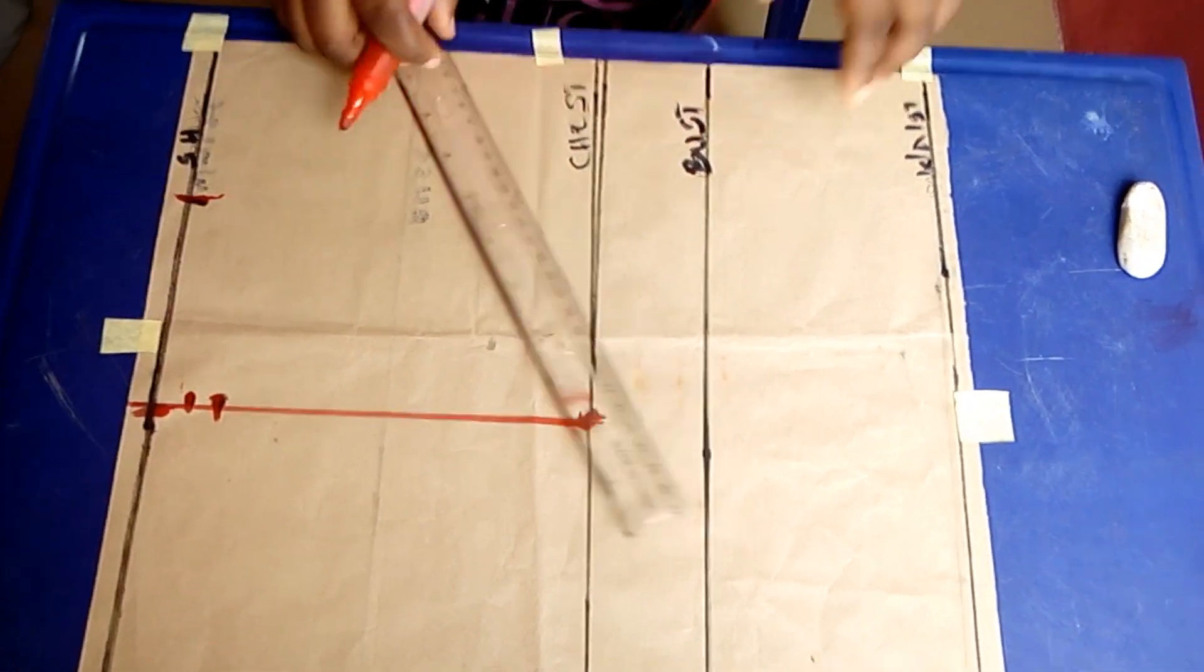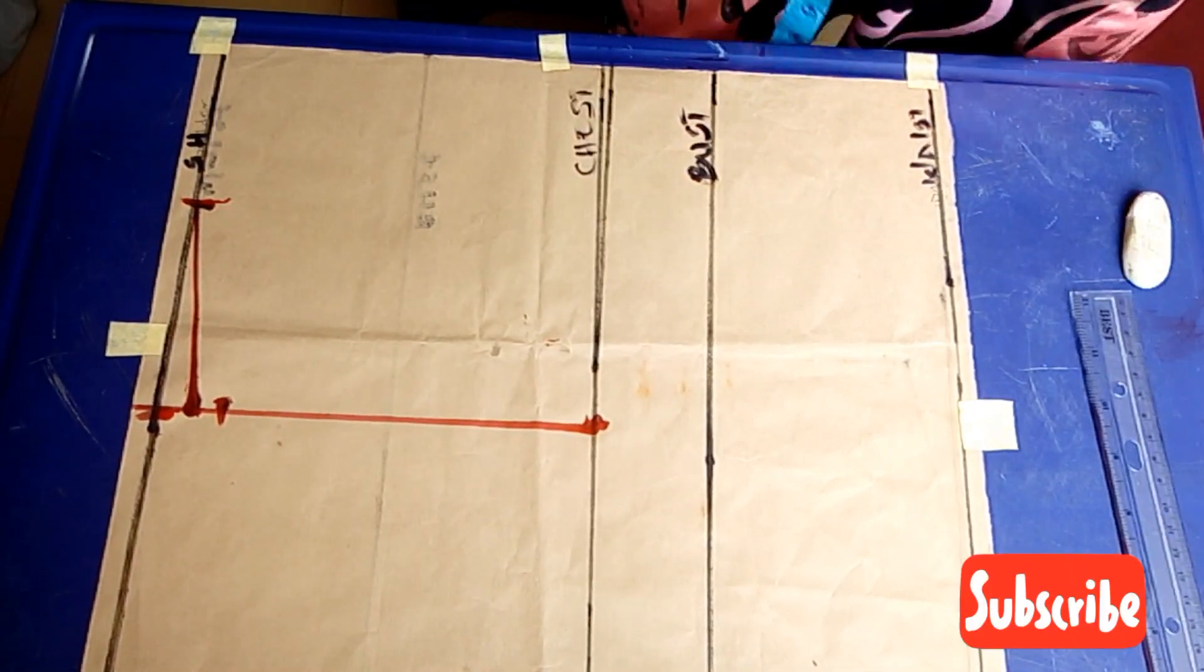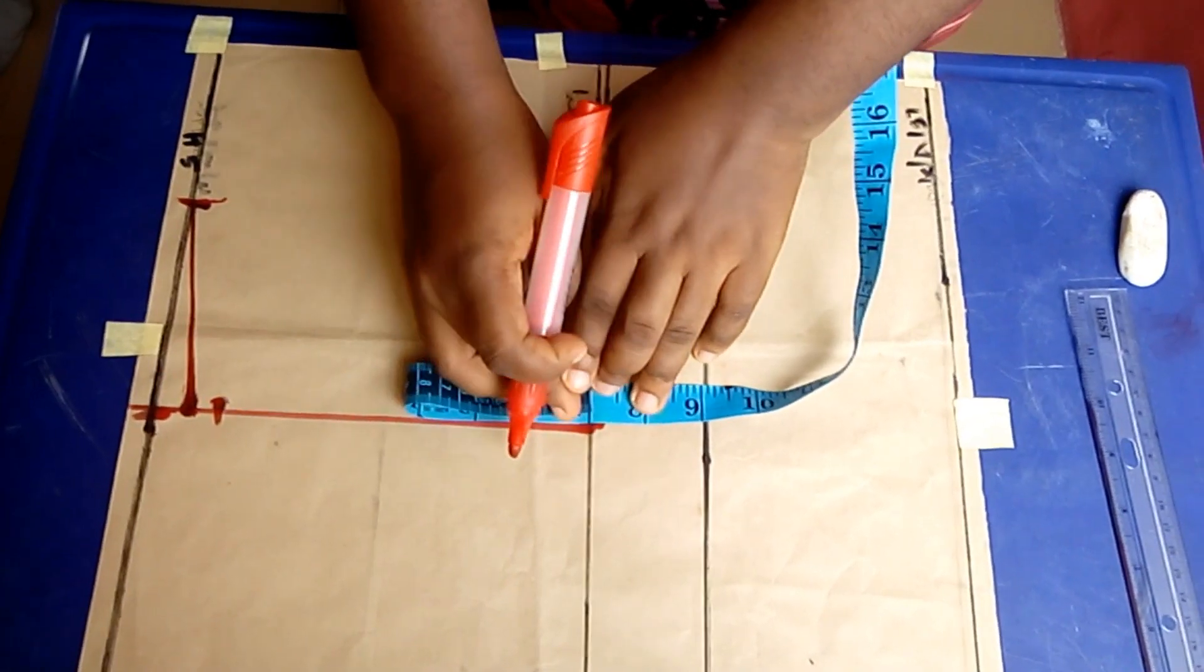I'm going to be using half inch here because the person I'm making this for is on the smaller size. You can go as much as one inch or even 1.5 for your front armhole.